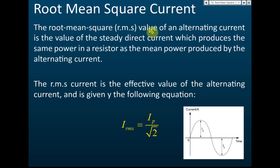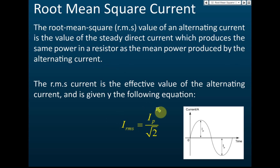The root mean square value of alternating current is the value of steady direct current which produces the same power in the resistor as the mean power produced by the alternating current. It is calculated as I_rms = Ip / √2, where Ip is the peak current — from zero to maximum or from zero to minimum.